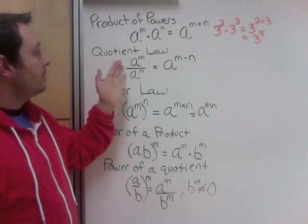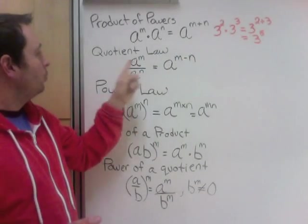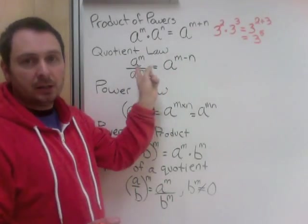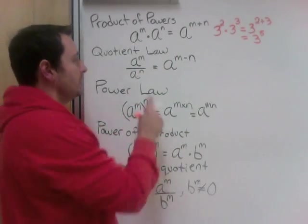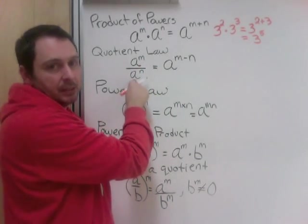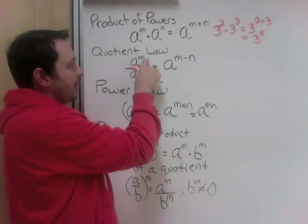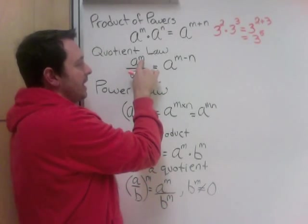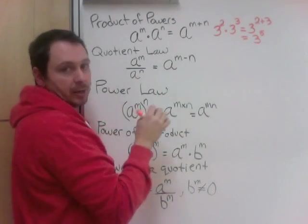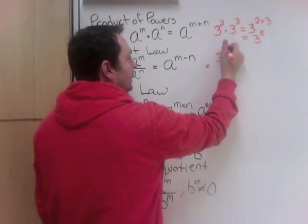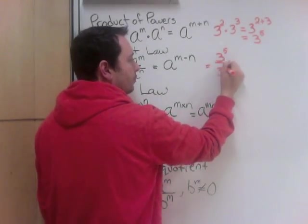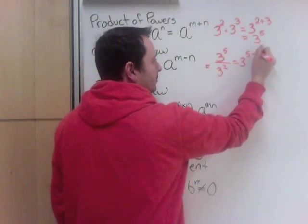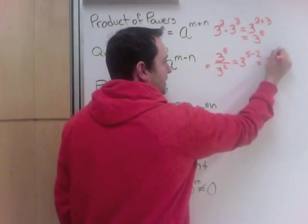Next is the quotient law. If multiplying gives us adding, then quotient — which is dividing — relates to subtracting. So when dealing with powers: multiplying means add, dividing means subtract. A to the power of M divided by A to the power of N — same base — when we divide, we subtract the powers: M minus N. An example would be 3 to the power of 5 divided by 3 squared. It's dividing two things with the same base, so I subtract the exponents and get 3 cubed.